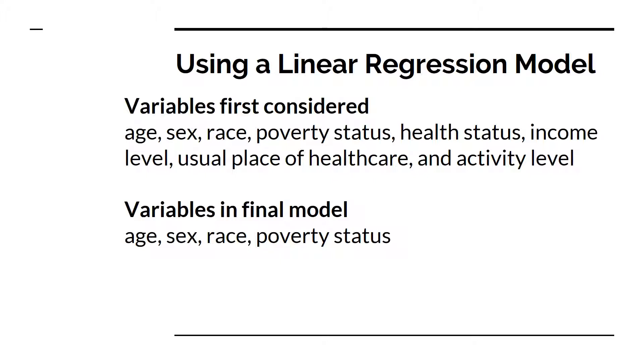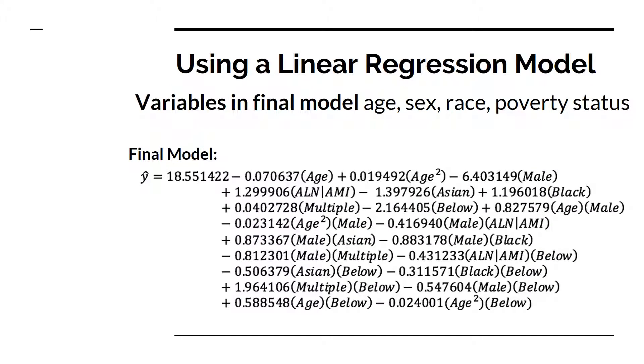The data cleaning process took a while to finalize. However, after a final model was selected, backward elimination was used to remove non-significant variables. Due to the interpretability issues with such a large model, a decision was made to stick with four main variables and their significant interactions. The four final variables are age with a quadratic term, sex, race, and poverty level.